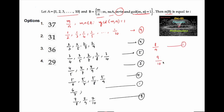9 upon 10 we cannot consider because M should be less than N. So the total number is: 9 plus 4 is 13, plus 5 is 18, plus 3 is 21, plus 4 is 25, plus 1 is 26, plus 3 is 29, plus 2 is 31. So the number of elements in set B is 31.